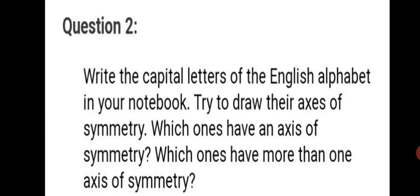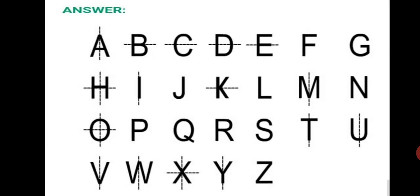Question number 2. Write the capital letters of the English alphabet in your notebook. Try to draw their axis of symmetry. Which ones have an axis of symmetry? Which ones have more than one axis of symmetry? Let's write A to Z first and try drawing axis of symmetry. For those alphabets which you cannot draw, you will have to leave it.